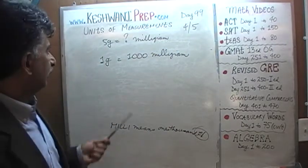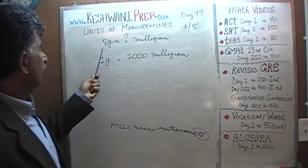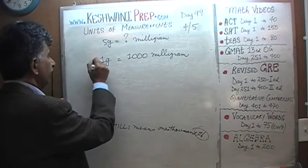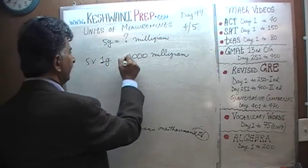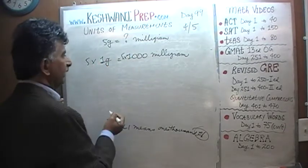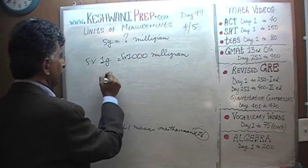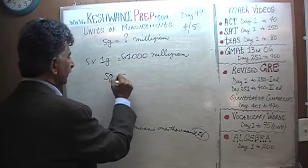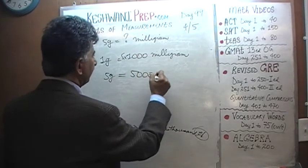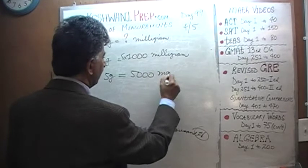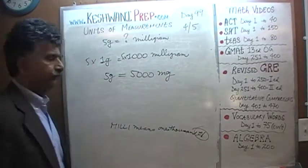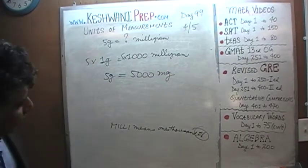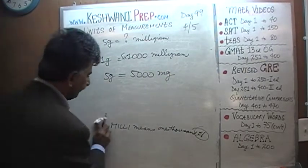One thousandth of a gram. We don't have one gram, we have five grams, so we just multiply both by five. Five grams turns out to equal exactly five thousand milligrams. That's all. Let's do one more.